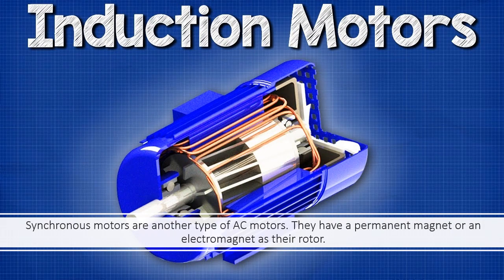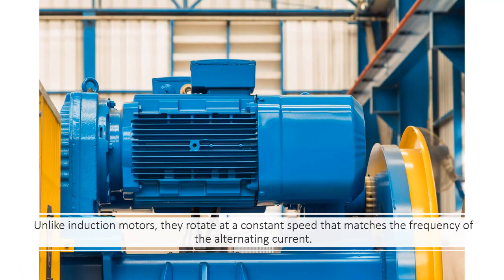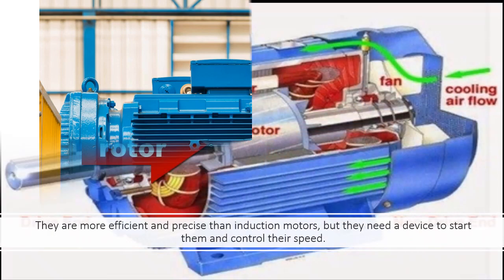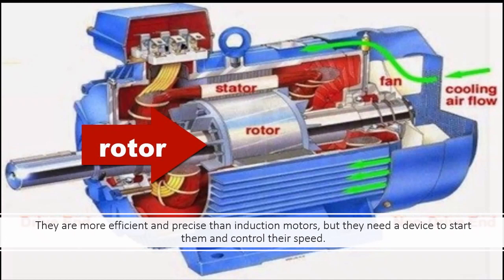Synchronous motors are another type of AC motors. They have a permanent magnet or an electromagnet as their rotor. Unlike induction motors, they rotate at a constant speed that matches the frequency of the alternating current. They are more efficient and precise than induction motors, but they need a device to start them and control their speed.